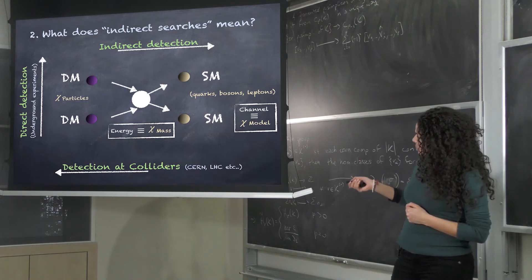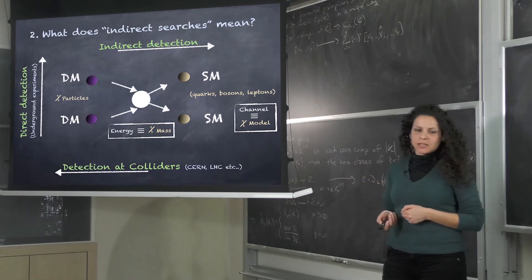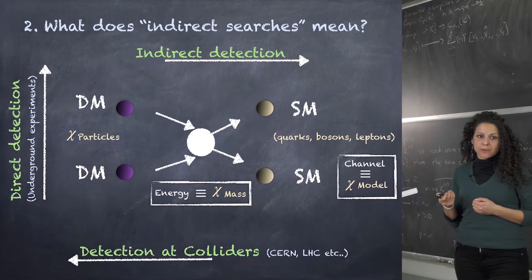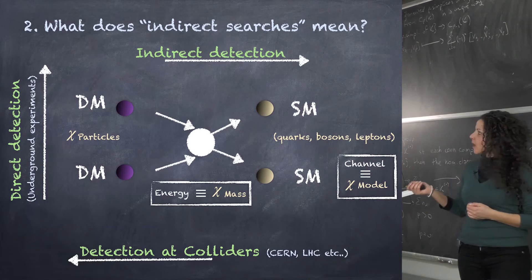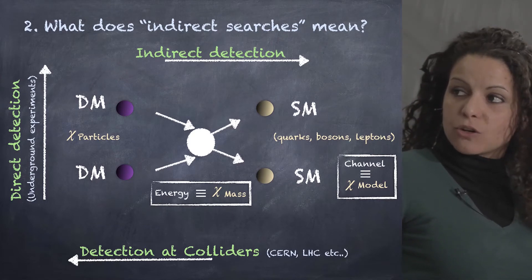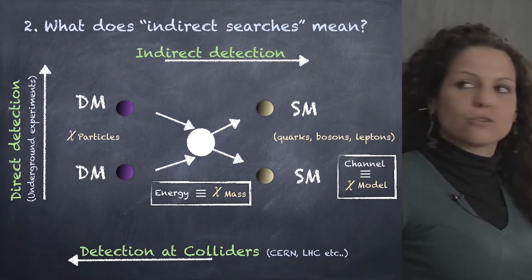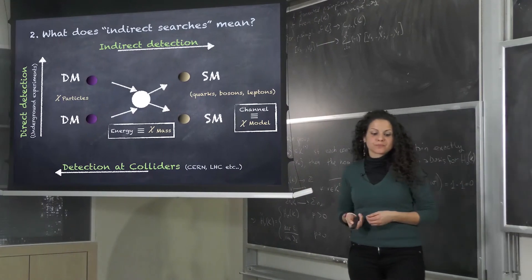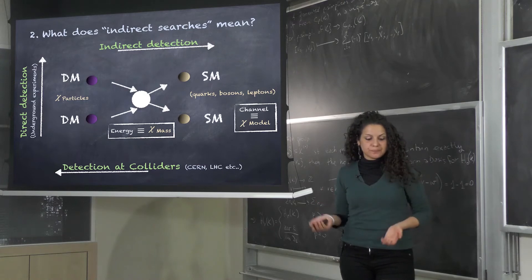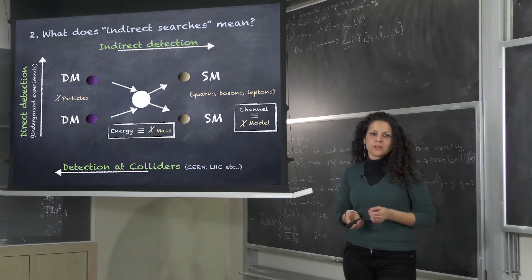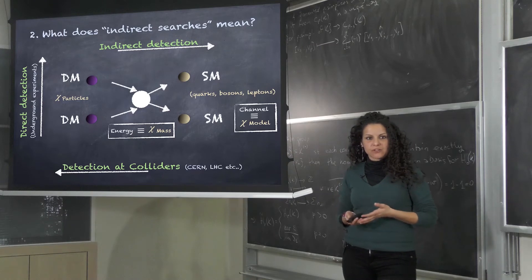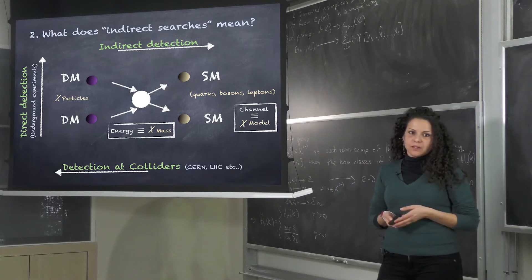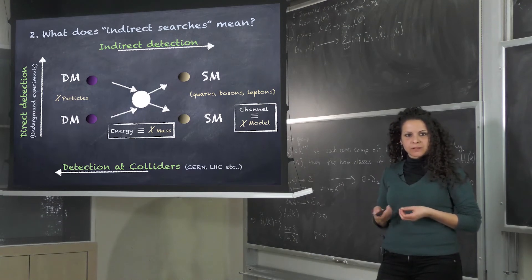For collider detection, at colliders like the LHC at CERN, we can accelerate two standard model particles and make a collision between them. Reading this scheme in the forward direction, by this collision we can observe the energy. We can detect a lost energy, and this lost energy could be associated with the mass of the dark matter particle.